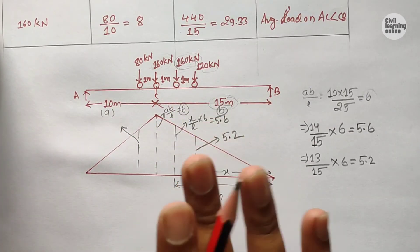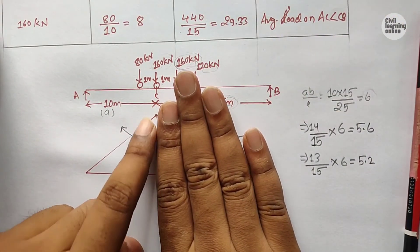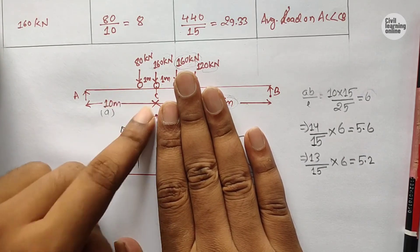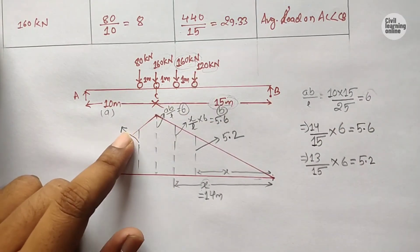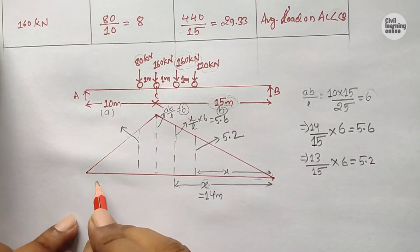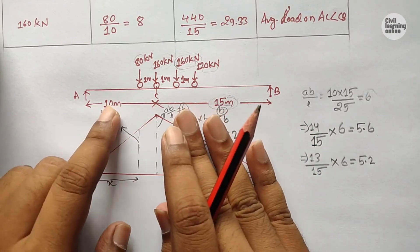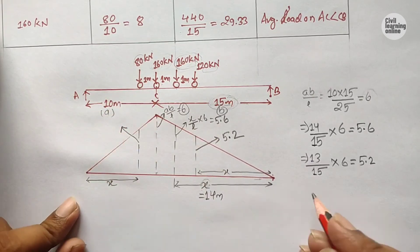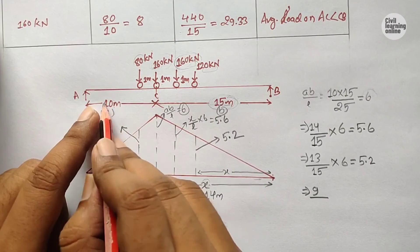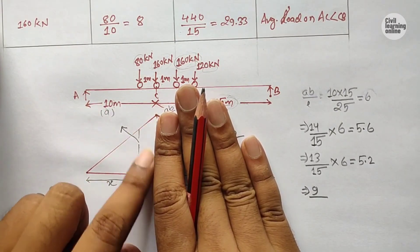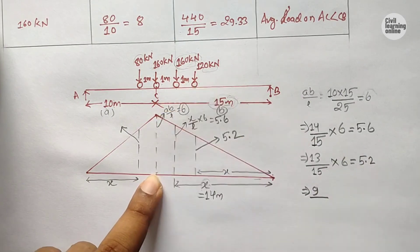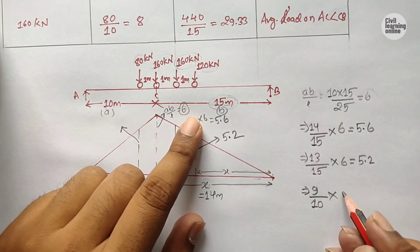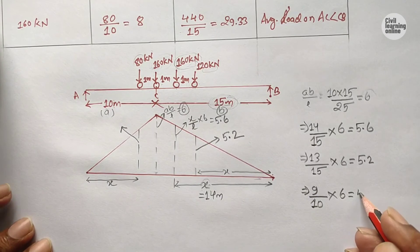For the 80 kN load (1 m to the left of C), we use the left triangle AC with base 10 m. Here x = 10 − 1 = 9 m. Ordinate = (9 / 10) × 6 = 5.4.